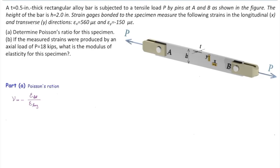So nu is negative epsilon lateral divided by epsilon longitudinal. The lateral strain is epsilon y, longitudinal strain is epsilon x. And if I do the calculation, I will come up with 0.268 as Poisson's ratio.